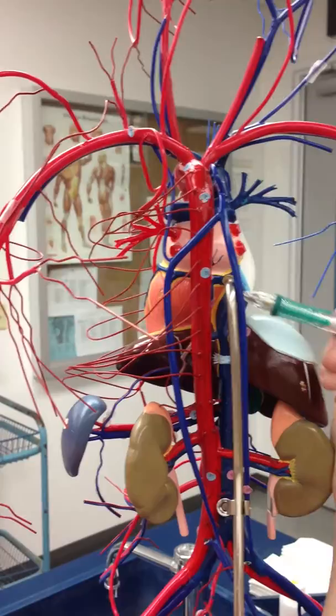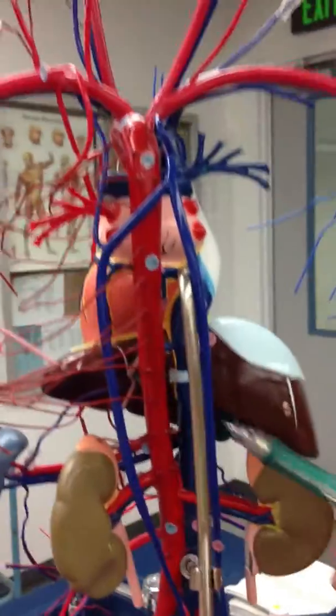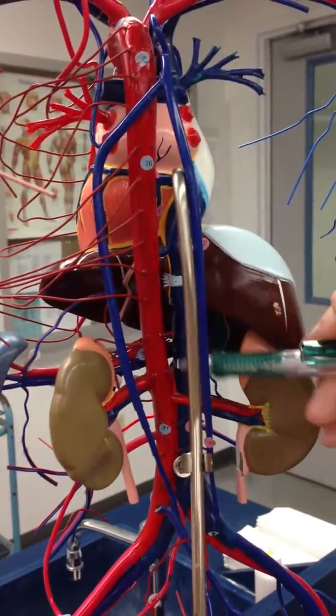The thoracic aorta is here above the liver, number 76, and the abdominal aorta is number 81 here in the abdomen.